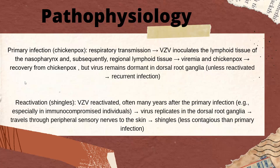After recovery from chickenpox, the virus remains dormant in the dorsal root ganglia. During reactivation — usually when there is an immunocompromised state, often many years after the primary infection — the virus replicates in the dorsal root ganglia and travels through the peripheral sensory nerves to the skin, leading to shingles.